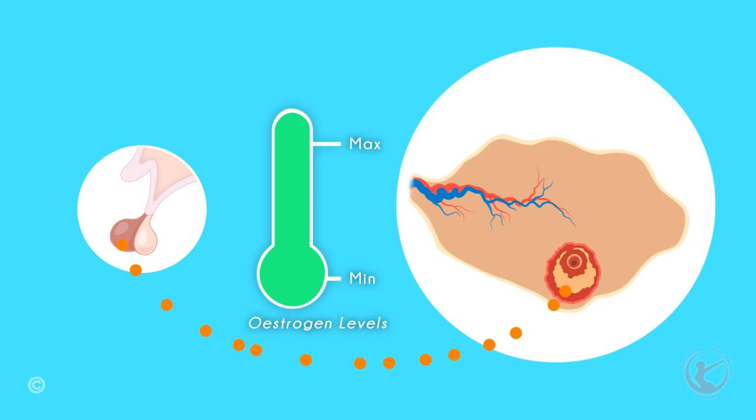The egg is released, and what is left of the follicle in the ovary is now called the corpus luteum, and this starts to produce the hormone progesterone. If you fail to conceive, everything goes back to normal, and you now start the cycle again with a new follicle.